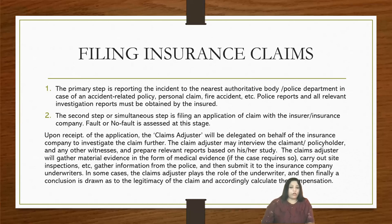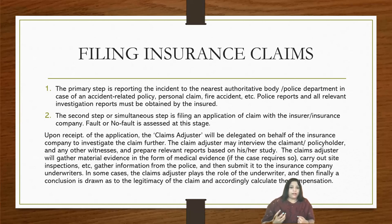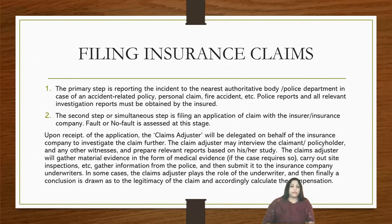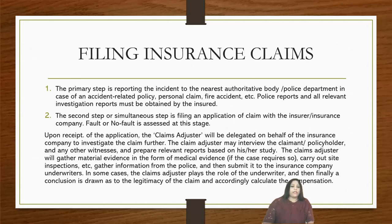What is the procedure for filing an insurance claim? The primary step is reporting the incident — for example, a fire is reported to the nearest police station, and then the police will come and assess the matter, investigate and give you a report. This is a document that needs to be collected by you in order to help you file a claim. The primary step is reporting the incident to the nearest authorities or police department in case of an accident-related policy, personal claim, fire accident, etc. The police reports and all relevant investigation reports must be obtained by the insured. The next step is filing an application or claim with the insurance company, where fault or no fault is assessed.